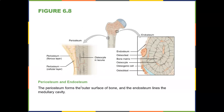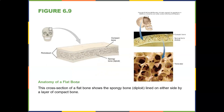Here's the periosteum, which is a fibrous outer layer, and then the endosteum. The periosteum forms the outer surface of the bone, and the endosteum lines the medullary cavity. You also have osteocytes sitting in lacunae — little indentations where the osteocytes fit. Compact bone is pretty resilient, while spongy bone can give a little, absorbing shock and stress better than compact bone.